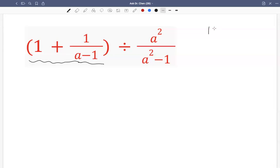But I always like to say 1 is a transformer, where something divides itself. So in this case, because we need to construct a common denominator of a minus 1, we're going to change this 1 to be a minus 1 divided by itself.